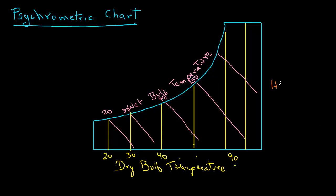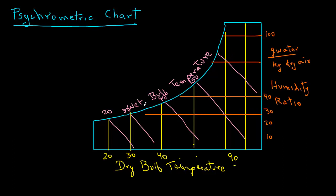The right hand side axis is for humidity ratio. And we write numbers as 10, 20, 30, 40, 100. The units are grams of water per kilogram of dry air. And humidity ratio lines are represented as horizontal lines. So again, any point on a line represents a constant humidity ratio.